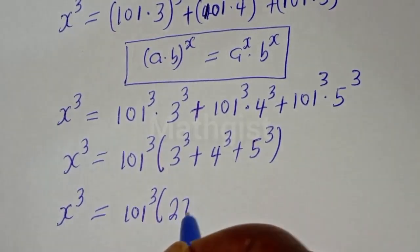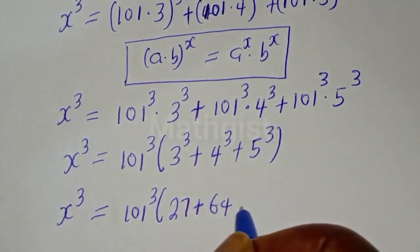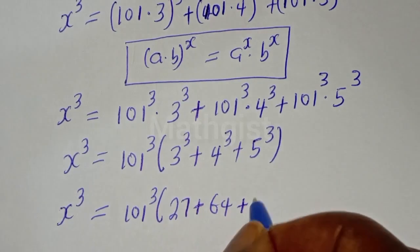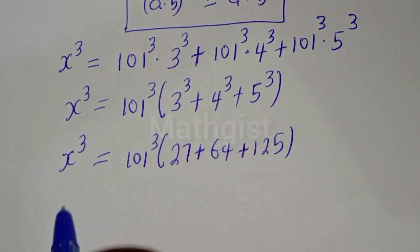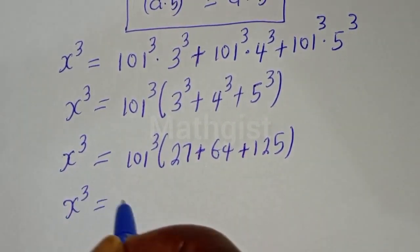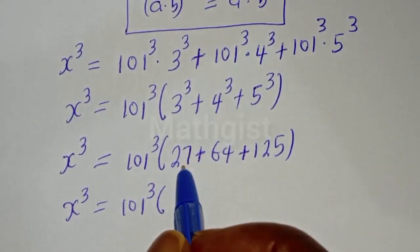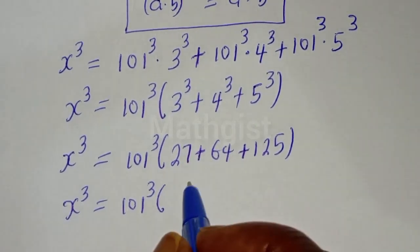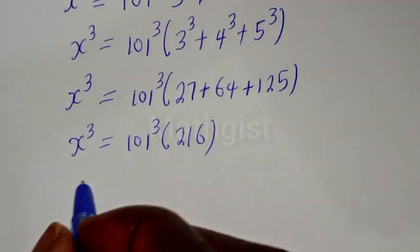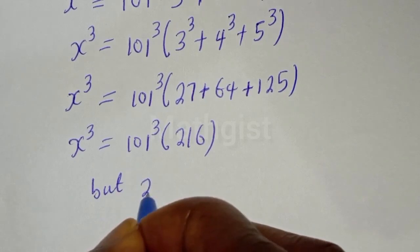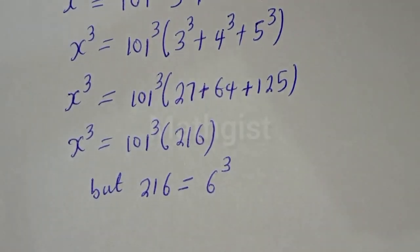S raised to power 3 is equal to 101 raised to power 3, bracket: 3 raised to power 3 is 27, plus 4 raised to power 3 is 64, plus 5 raised to power 3 is 125. That gives 27 plus 64 plus 125, which equals 216. And 216 is equal to 6 raised to power 3.